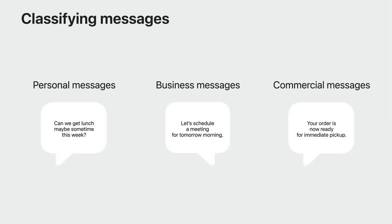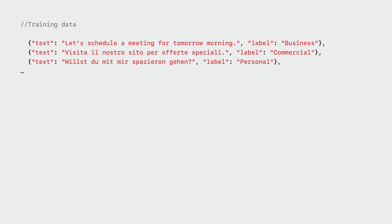Suppose you're writing a messaging app and want to aid users by automatically classifying the messages they receive — dividing them into three categories: personal messages such as you might receive from friends, business messages from colleagues, and commercial messages from businesses you interact with. But users might receive messages in many different languages, and you want to handle that. For this example, I've assembled some training data in multiple languages — English, Italian, German, and Spanish — in JSON format, though you could also use directories or CSV.